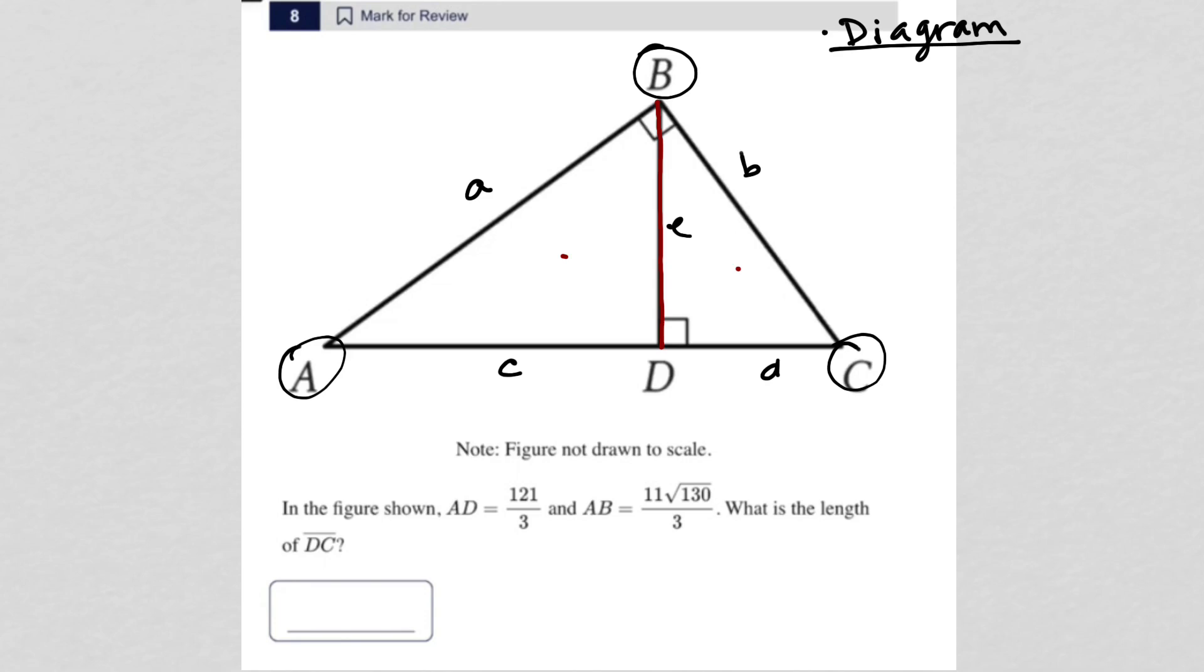It is that the left side of this right triangle squared, so A squared, is equal to the base of the right triangle directly beneath that side, so C, times the entire base of the right triangle, so C times C plus D.